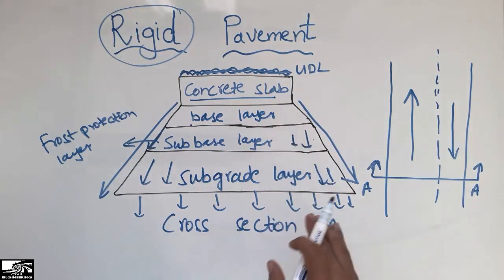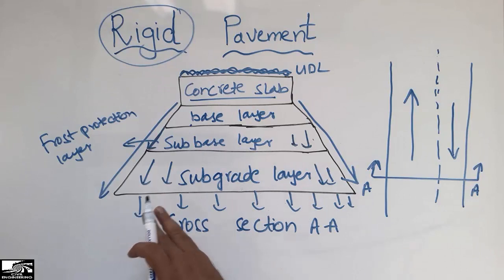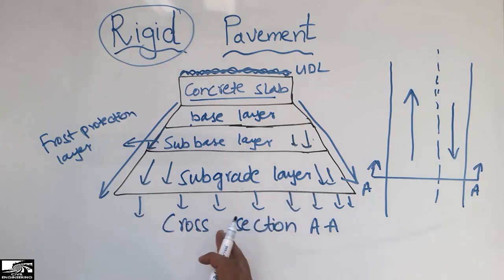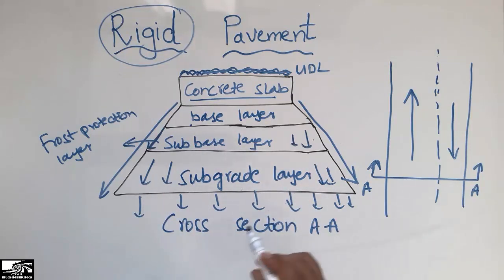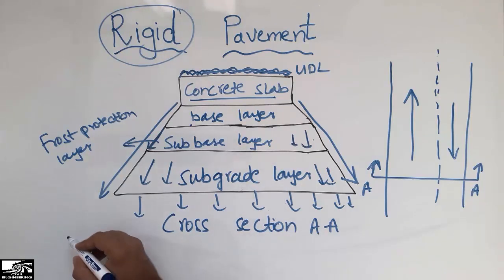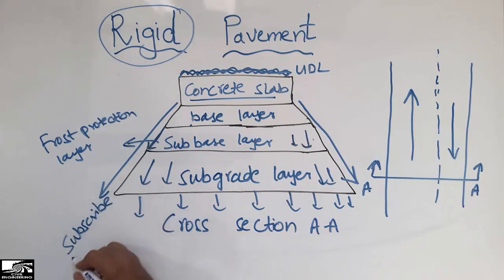This is the way that load is safely transferred from above to the bottom layers. That was all about the rigid pavement. If you want to know about the difference between rigid and flexible pavement, I provided a link — go there and watch the video. I hope you understand about rigid pavement. Don't forget to subscribe for daily civil engineering videos. Thank you for watching.